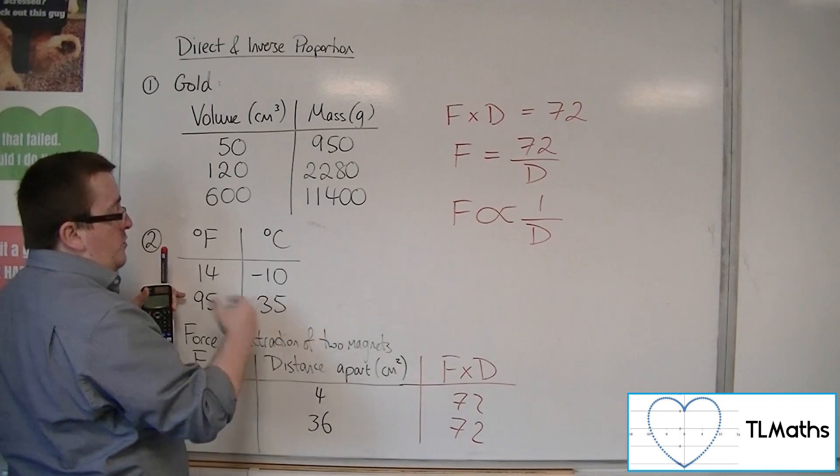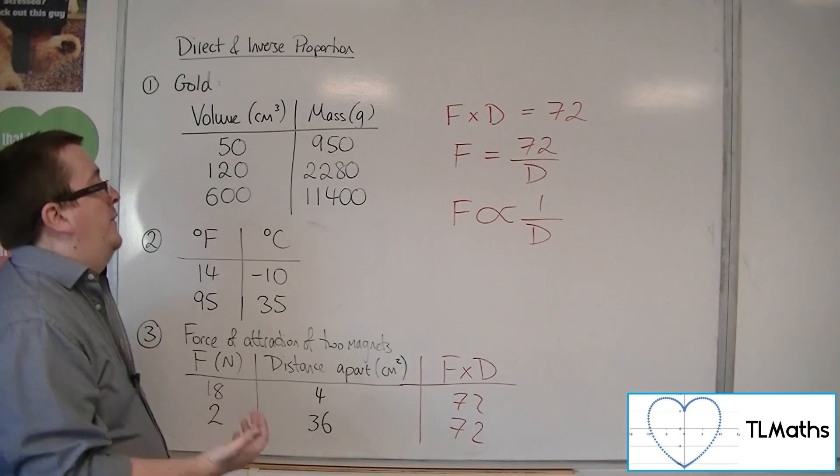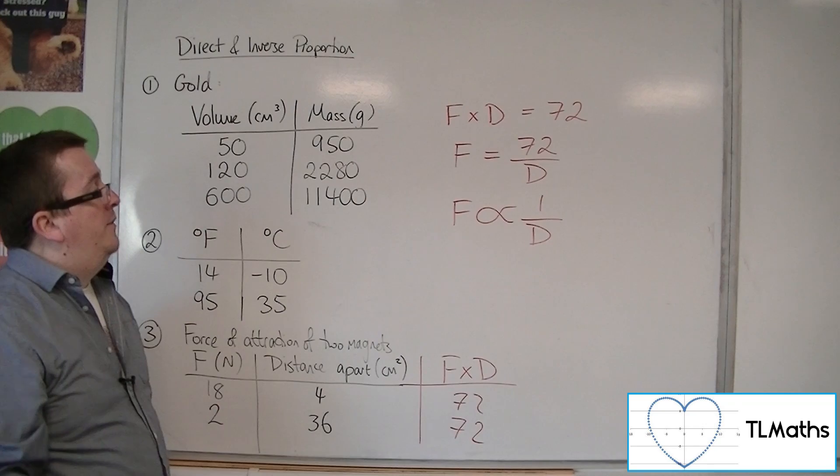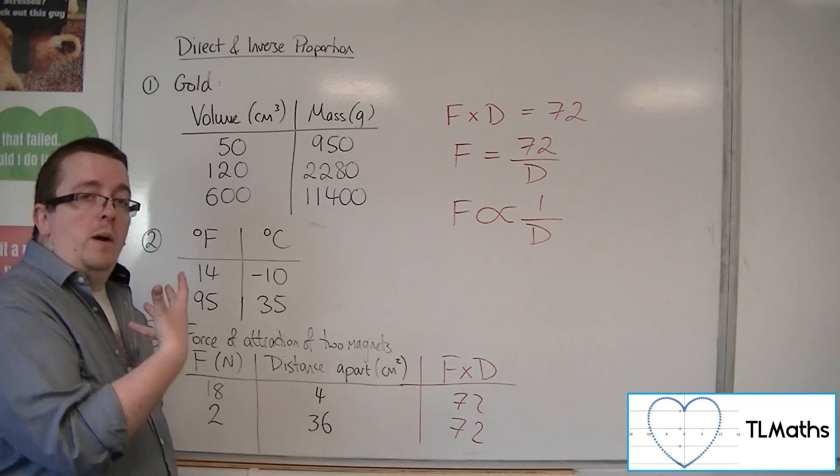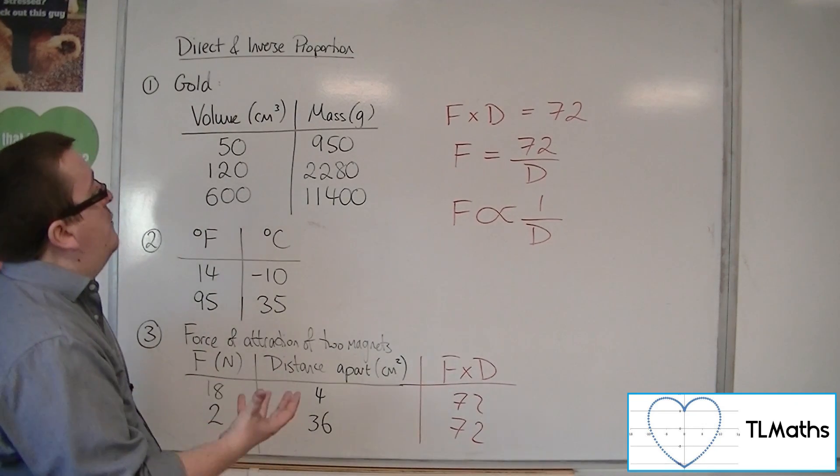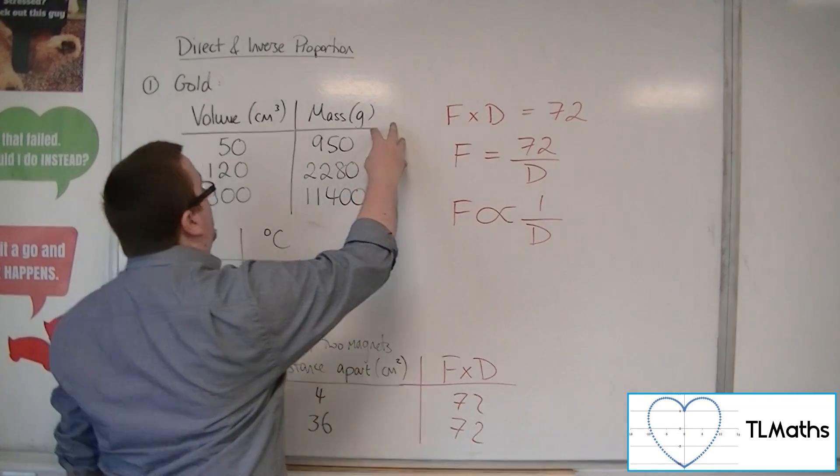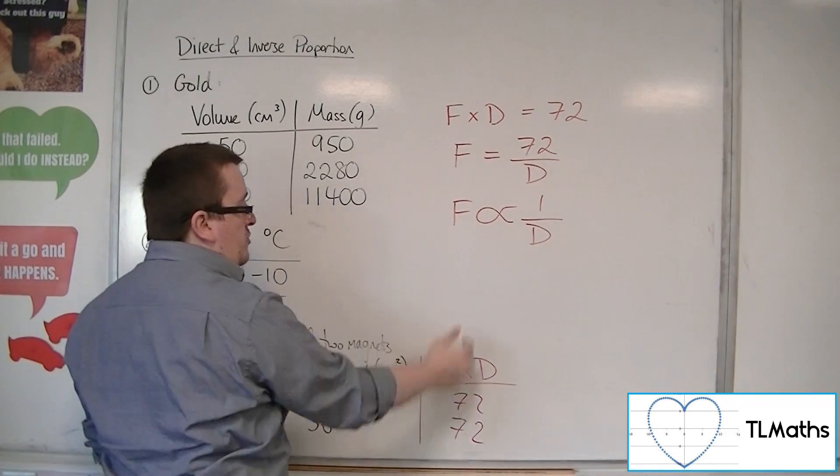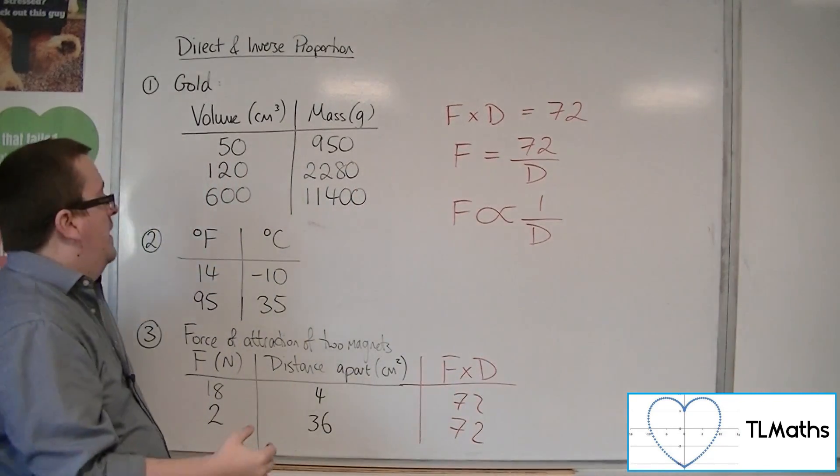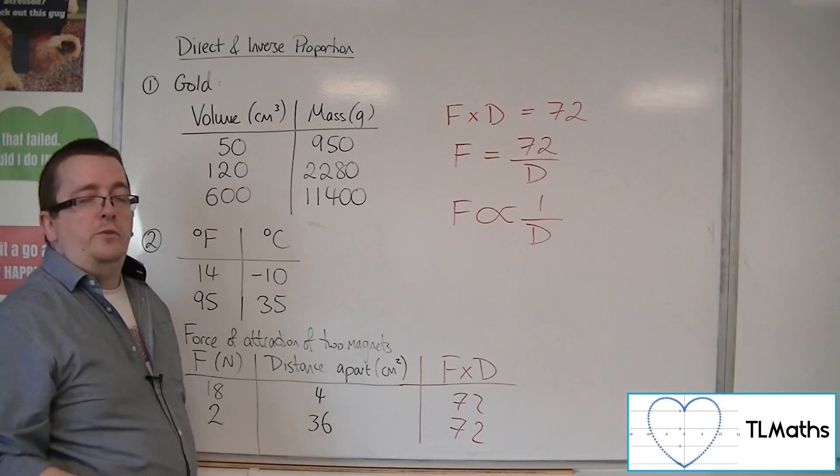So when you're given a table of values, this would be your approach. You'd have to show that there is this constant of proportionality from questions 1 and questions 3, and the fact that it doesn't work at all for question 2.